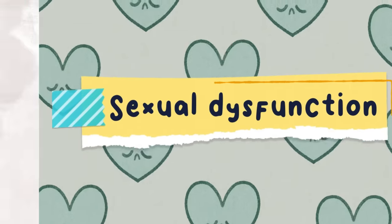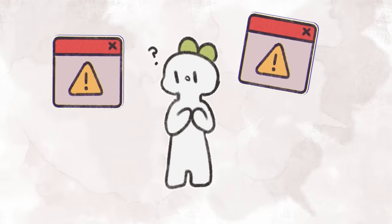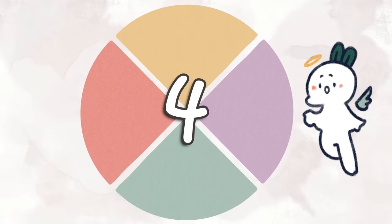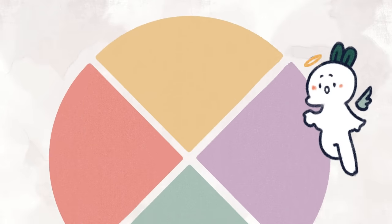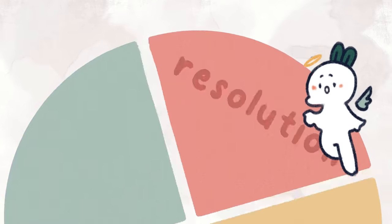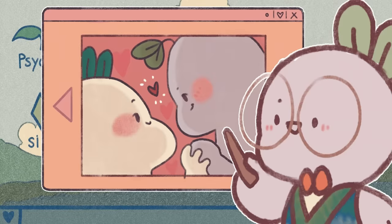Sexual dysfunction is a condition characterized by problems in one or more phases of the sexual response cycle. The sexual response cycle refers to the four stages: arousal, excitement, plateau, orgasmic, and resolution. All these phases are necessary for sexual functioning and a sexual experience.